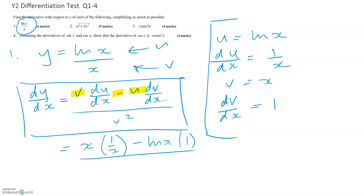All over v squared, so it's all over x squared. As you can see, the x terms cancel here, leaving you with 1. So you get 1 minus ln(x), all over x squared, and that isn't really going to simplify any further, so let's leave it like that.